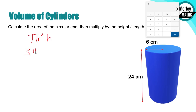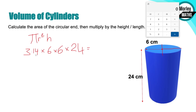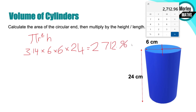Pi is normally given as 3.14 or 3.142 - we'll use 3.14 here. R stands for radius: from the centre of the circle to the edge. The full width is the diameter. Sometimes a question will give you the diameter, so you have to halve it to get the radius. Here the radius is 6. R squared means 6 times 6. Then multiply by the height 24. That gives us a volume of 2712.96 centimeters cubed.